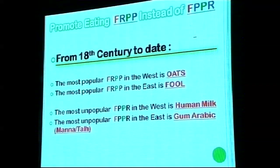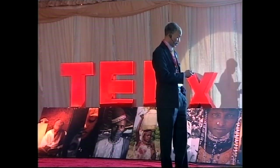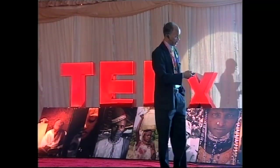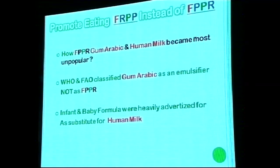In the East, people also consume too much of fiber-rich foods daily, while the most underused prebiotic sources are human milk and gum arabic. This happened partly because WHO and FAO classified gum arabic as an emulsifier — only useful as a food additive — rather than recognizing it as a prebiotic-rich product. As a result, people ignored gum arabic's primary value as a prebiotic.